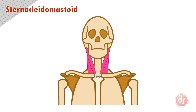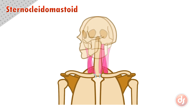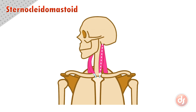When we face forward, the sternocleidomastoid comes from behind the ear to the middle of the neck, creating a graceful spiral. When the muscle contracts, the side in action will be pulled tight, creating a long straight line. The opposite side will be stretched out, spiraling even more to aim for the mastoid process behind the ear.